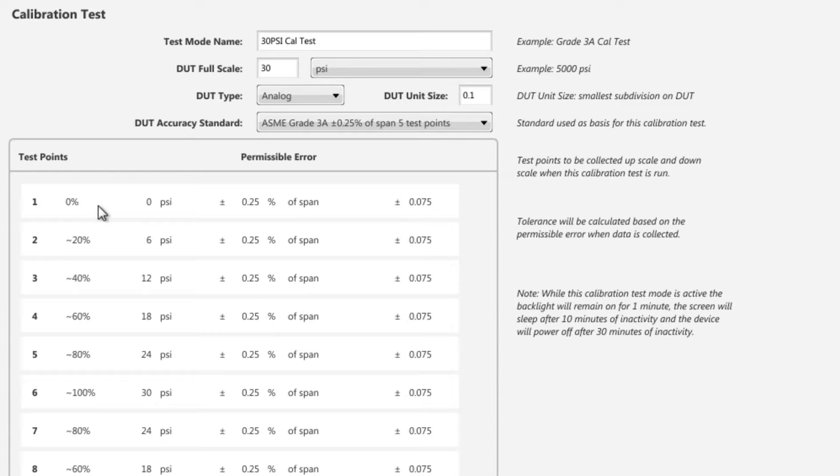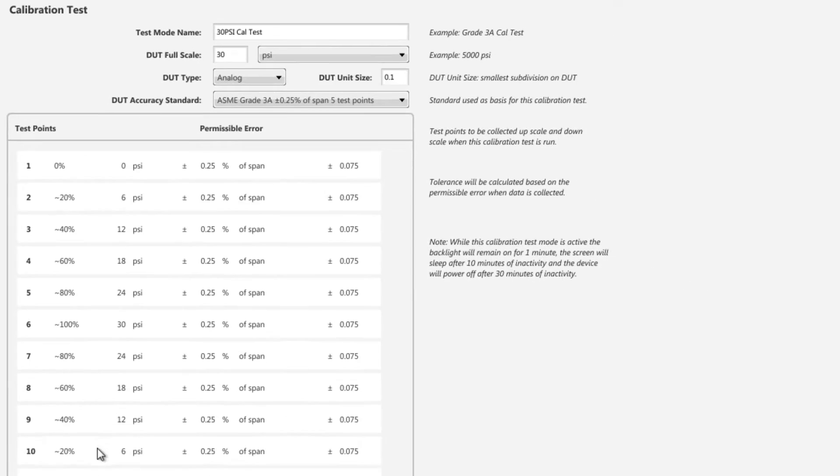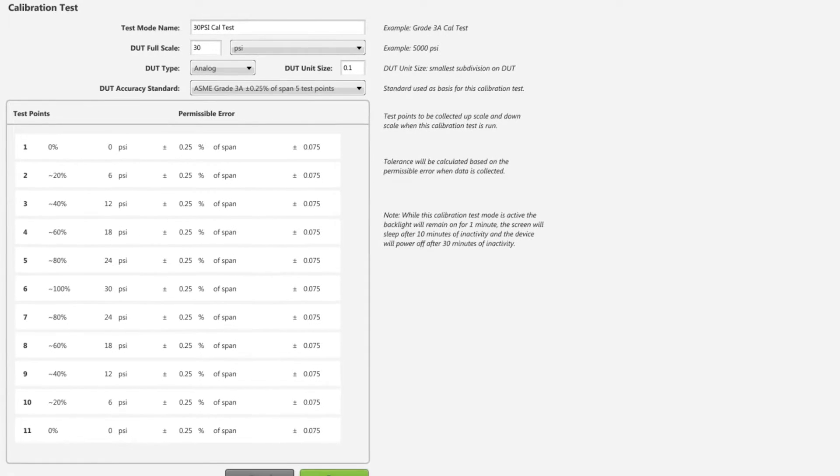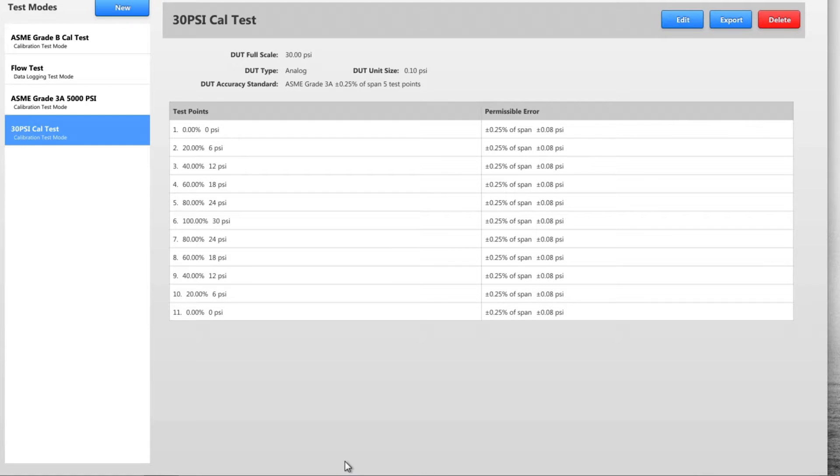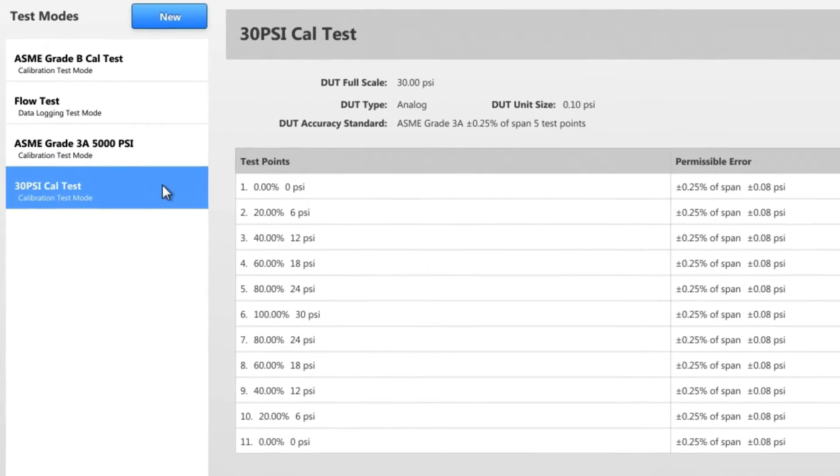This will give us 11 test points, a starting point of 0, with 5 points going up and 5 points coming down. Now we click save, and our 30 PSI CalTest test mode shows up in our test mode library.